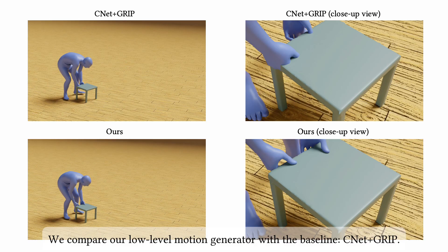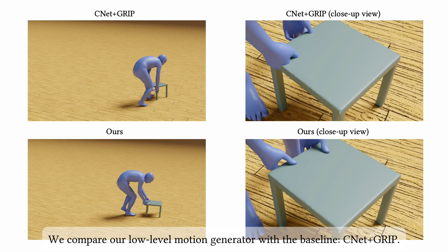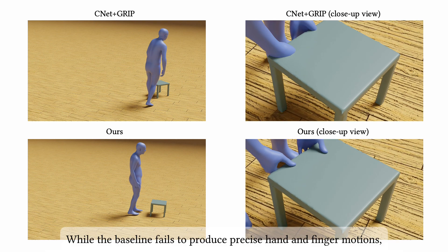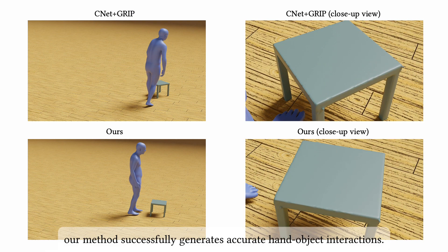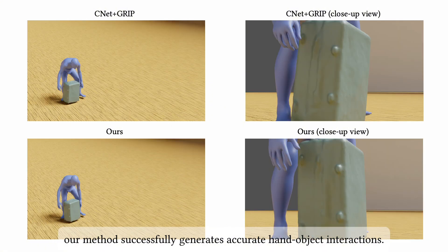We compare our low-level motion generator with the baseline, CNET plus GRIP. While the baseline fails to produce precise hand and finger motions, our method successfully generates accurate hand-object interactions.